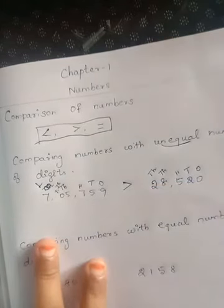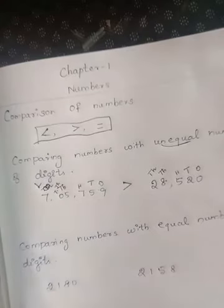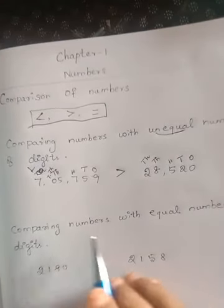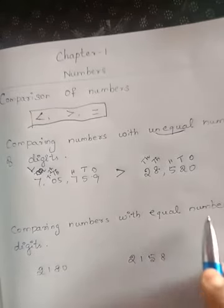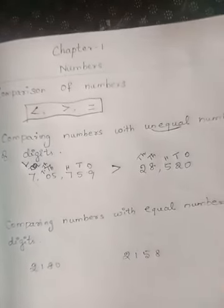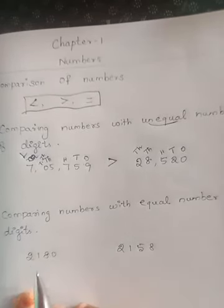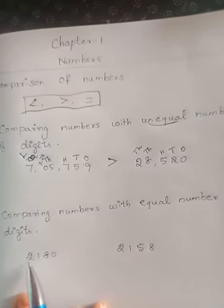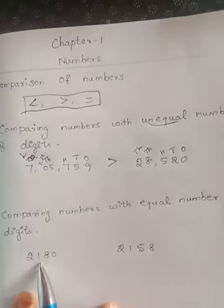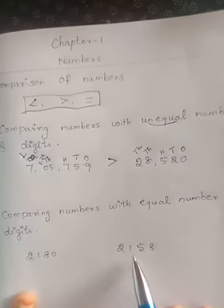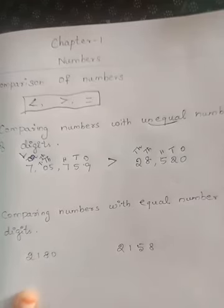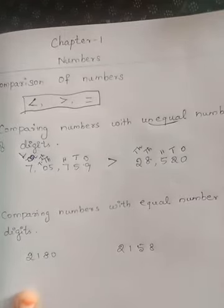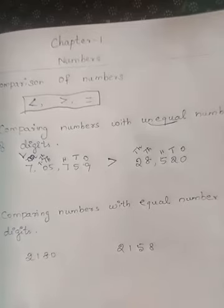Next is comparing numbers with equal number of digits. See here: two one eight zero, that is two thousand one hundred and eighty, and two thousand one hundred and fifty eight. Here both the sides have four digits. So what we have to see is...